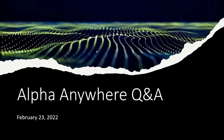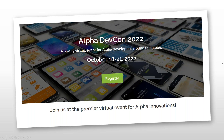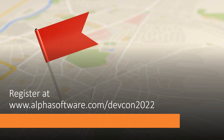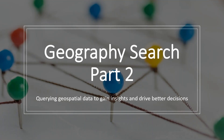Welcome, everybody, to the Alpha Anywhere demo and Q&A live webcast. We are going to be continuing the geography search content. Two weeks ago we talked about using it in a grid, and the number one question everyone had was: what about a list? Also, Alpha DevCon 2022 is around the corner — you can register at www.alphasoftware.com/DevCon2022. Today we'll be talking about geography search, part two, specifically with the list.